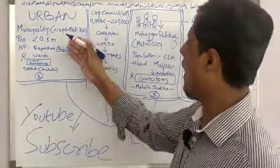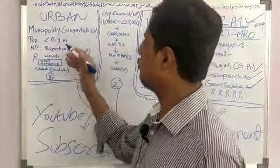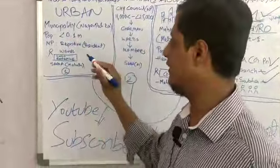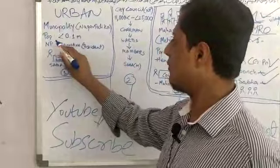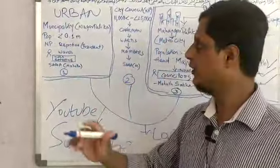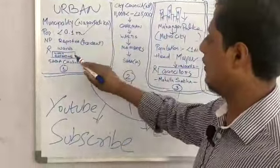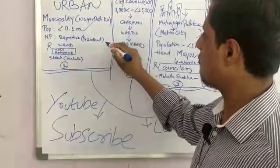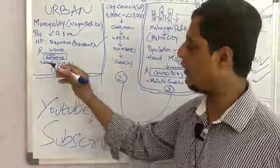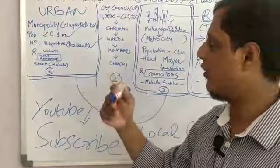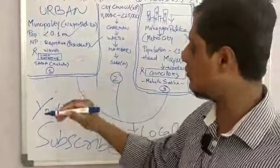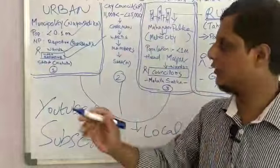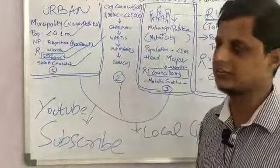Now we will come to urban. In urban areas we have a municipality, called Nagarpalika in Hindi. The population consists of below 1 million. The representative is a president. And they have wards — first ward, second ward, third ward — and each ward has ward representatives, also called sub-area members.